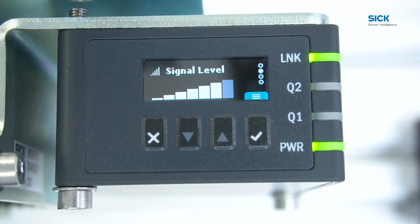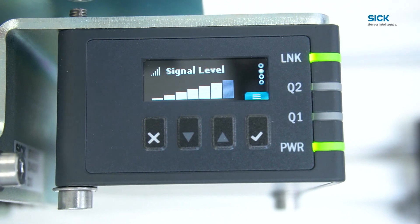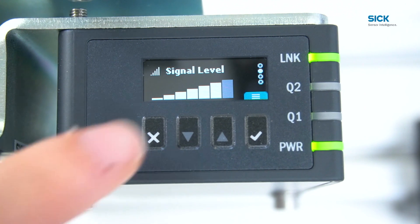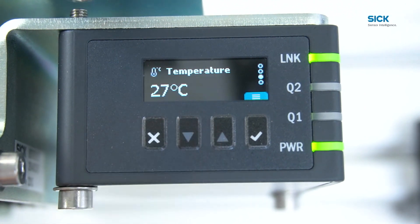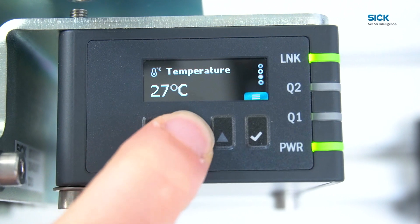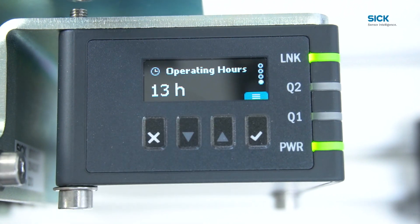This bar graph represents the strength of the received signal. On the third display, you can observe the internal device temperature. The final display presents the operating hours of the device.